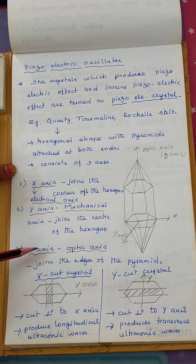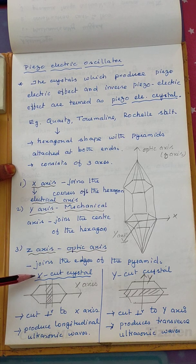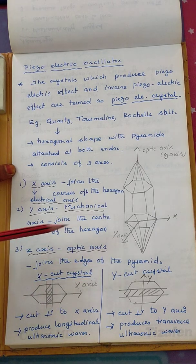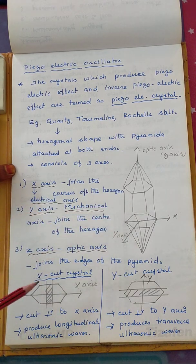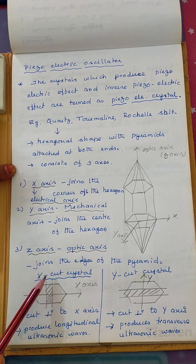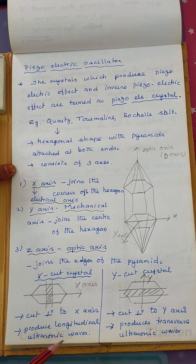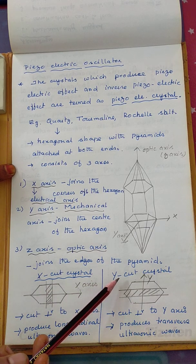When you want to use a piezoelectric crystal in practice, it should be cut in a specific way — one is the X-cut and the other is the Y-cut crystal. The X-cut crystal is a slice cut perpendicular to the X axis. When used in a piezoelectric oscillator, the X-cut crystal produces longitudinal ultrasonic waves.